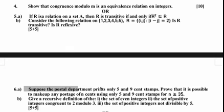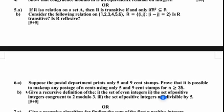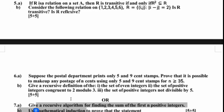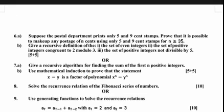Question 6: if the postal department prints only five-cent and nine-cent stamps, prove that it is possible to make up postage of N cents using only five and nine cent stamps for N greater than or equal to 35. Such model questions will be asked tomorrow. Also, recursive definitions — give a recursive definition for sets like positive integers congruent to modulo 3, integers not divisible by five. Give a recursive algorithm. Mathematical induction — prove the given statement. All these concepts were already covered in my important concepts video posted day before yesterday.